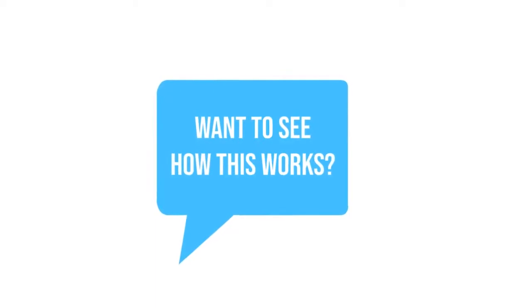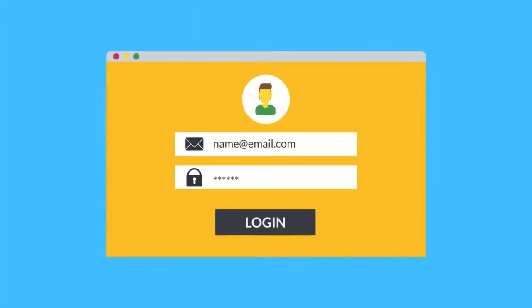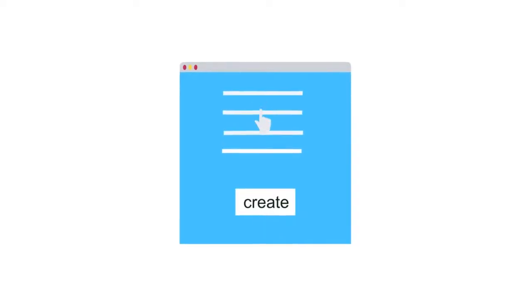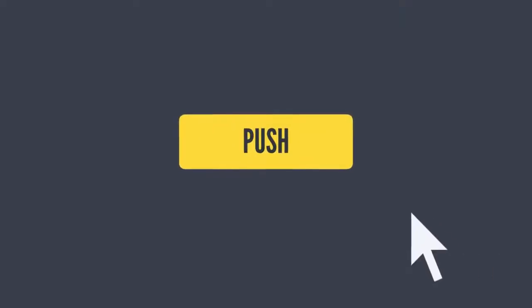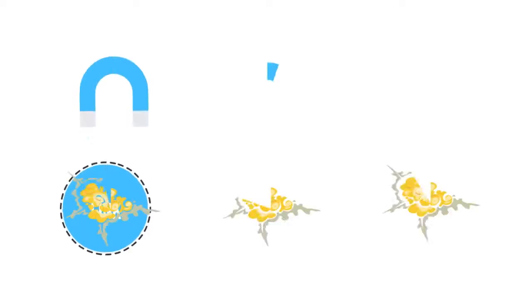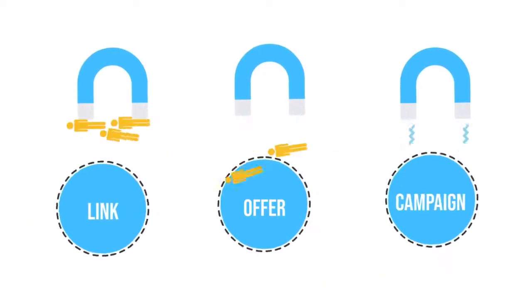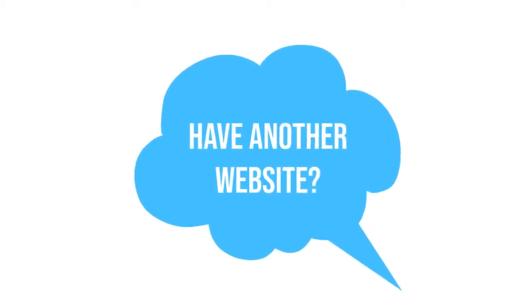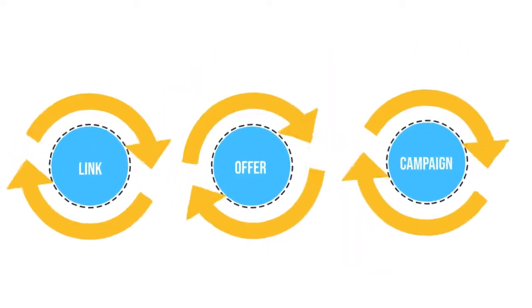Want to see how this works? Let me show you. Once you log into the Trazl software, all you need to do is: step one, create a new campaign; step two, select what type of traffic you want; step three, push one button and drive floods of free traffic to any link, offer or campaign and watch your affiliate commissions explode. Have another website or link? Just rinse and repeat the same process for every site you have. It's that simple.